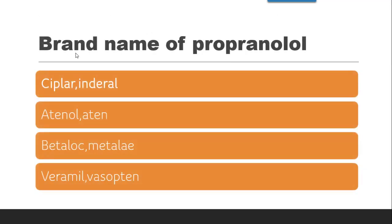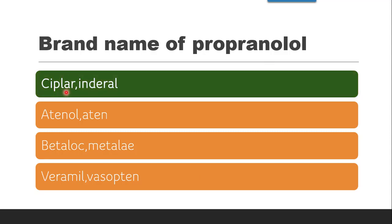The next question is: the brand name of propranolol is which — ciplar, inderal, atenolol, atenol, metoprolol, or verapamil? Atenolol and metoprolol are beta blockers with different names; verapamil and vasopran are calcium channel blockers. The correct answer is ciplar and inderal, which are brand names of propranolol.